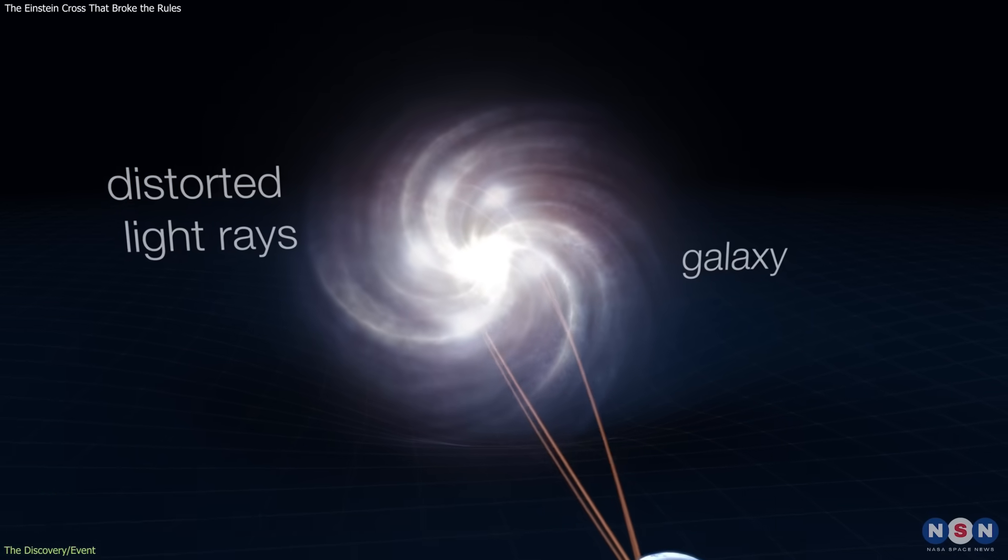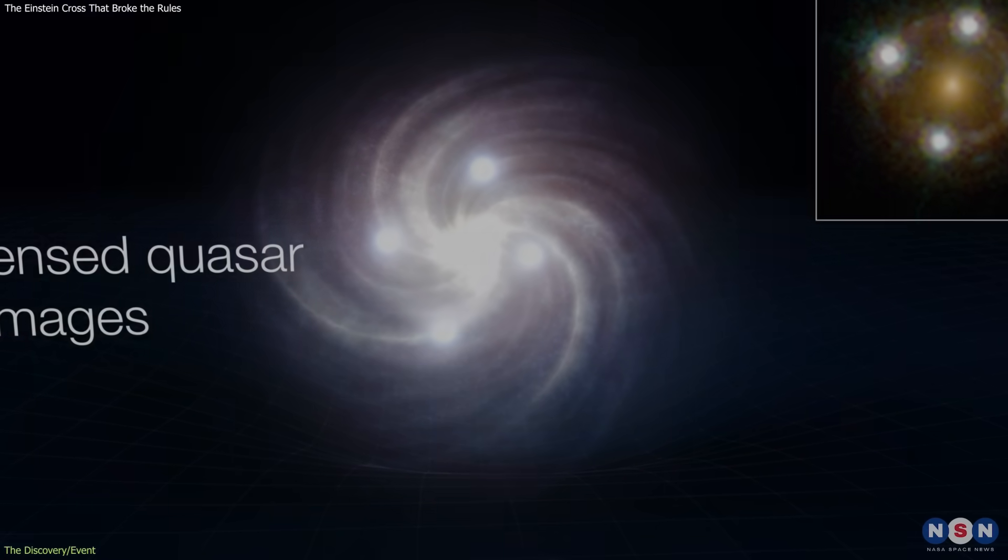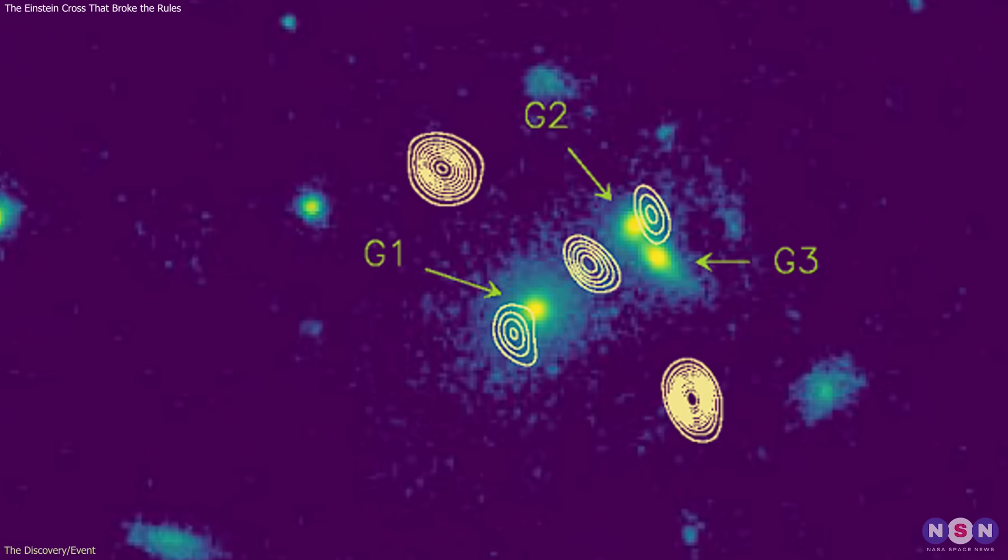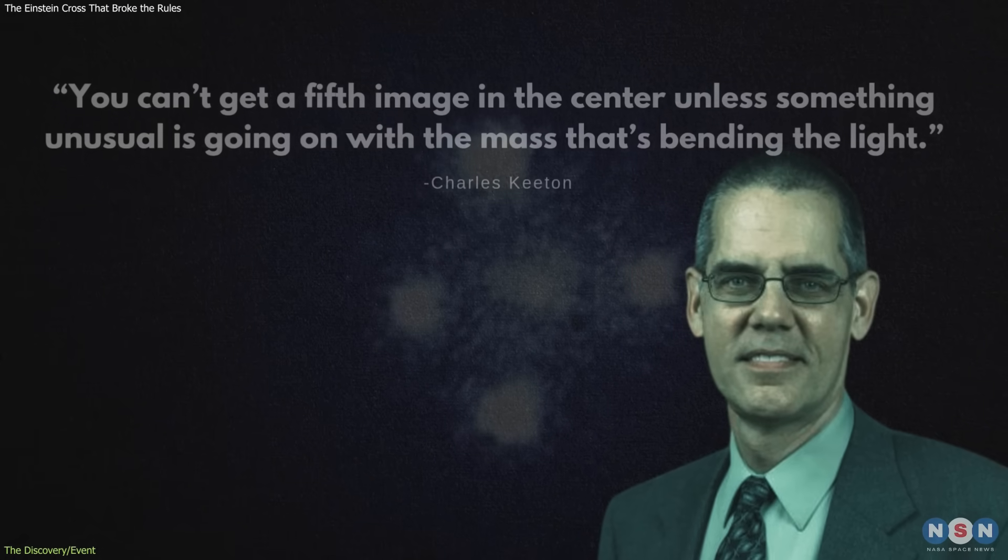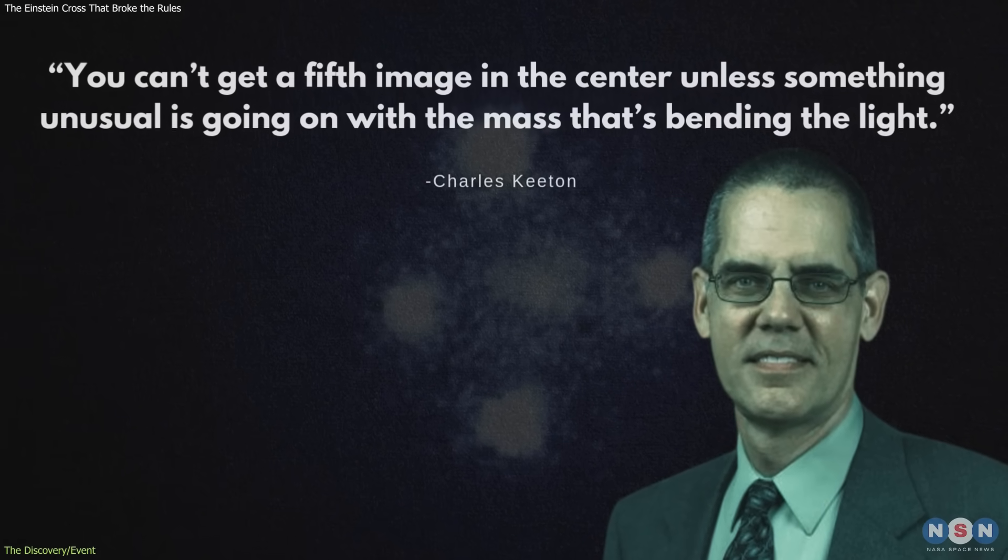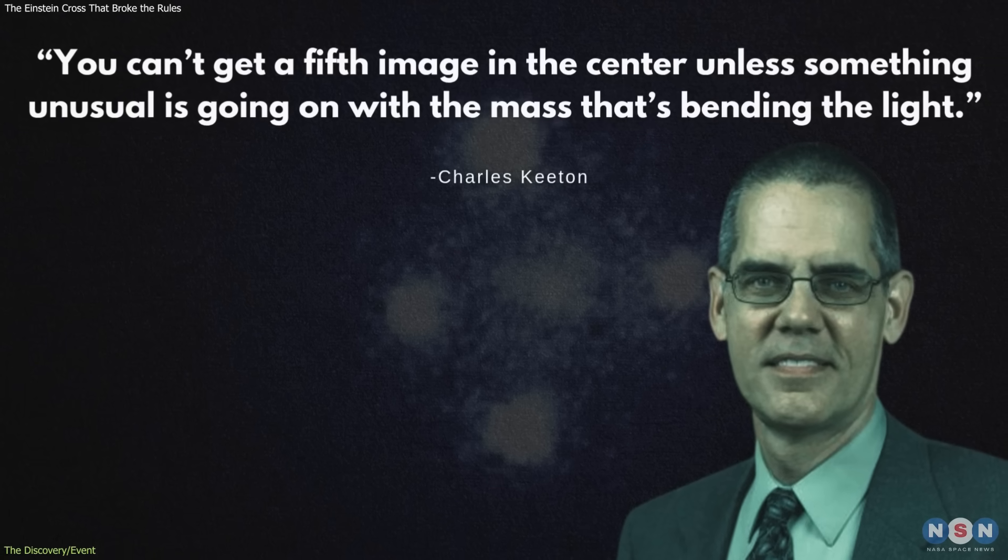Einstein crosses are predicted to show four images, no more, no less. A central image simply doesn't occur under normal lensing models. As Rutgers astrophysicist Charles Keaton noted, you can't get a fifth image in the center unless something unusual is going on with the mass that's bending the light.